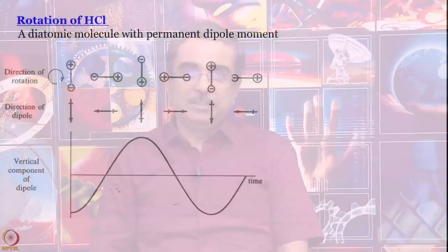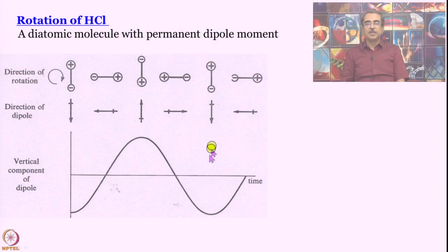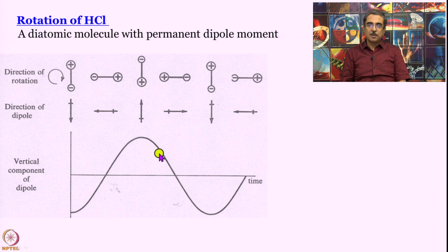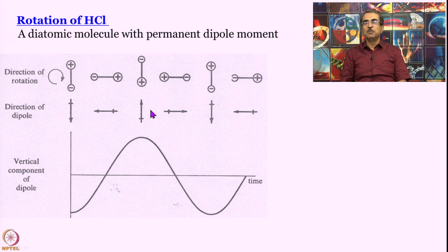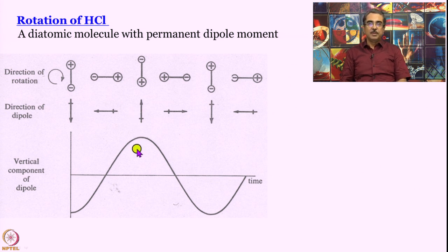That being said, let us talk about the rotation of a simple diatomic molecule, HCl. Note, we are not talking about H₂ — we will see why. What we need is a diatomic molecule with a permanent dipole moment. This is a figure taken from Banwell and McCash's book. To be very honest, I do not like this treatment too much, because it is always better to do the more rigorous treatment. Unfortunately, in this course there is no scope for it, so this should be good enough.